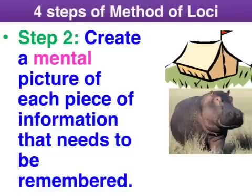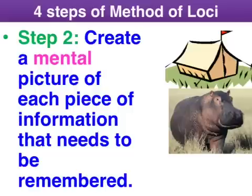Step two requires a bit more mental effort. We need to create a mental image of the pieces of information that we want to remember. I'm going to go with four aspects of the biological cause for Alzheimer's — I've already done a YouTube on Alzheimer's, so you can check out my channel for more on that. The first thing I want to remember is that Alzheimer's starts in the hippocampus, so I visualize a hippo camping. A bit corny, I know, but it works for me.